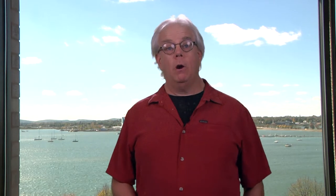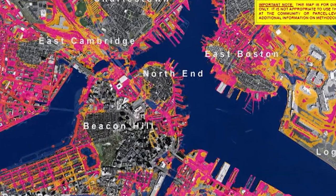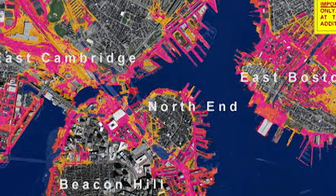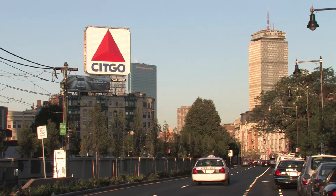Now we're going to look at them all together. Here we see our model of 2.5 feet of sea level rise with a 5-foot storm surge during a wicked high tide, which does show the overtopping of the Charles River Dam, which will then flood Back Bay and Cambridge. This map shows that Boston could become very vulnerable to coastal flooding by approximately the year 2050.